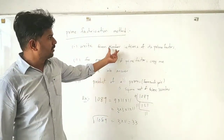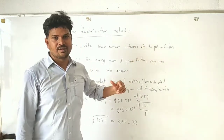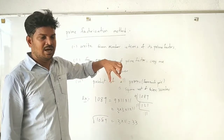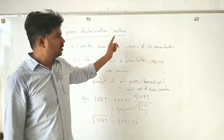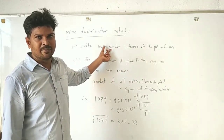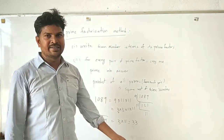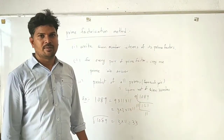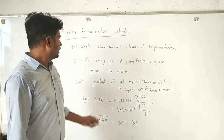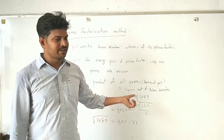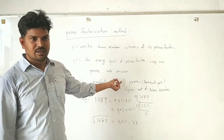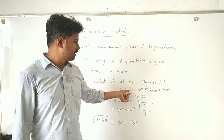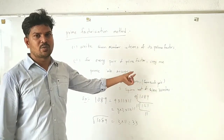First, write the given number in terms of its prime factors. You have to divide this given number by prime numbers until you get 1, and the product of all those divisors are called its prime factors. Now, for every pair of prime factors, copy one prime number into the answer. Finally, the product of all prime numbers taken from each pair will give you the square root of that number.